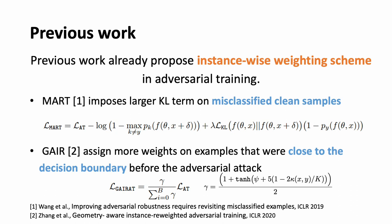Both of these works proposed reweighting methods on top of standard adversarial training. MART assigned larger weights to the KL term if the clean example is misclassified. GEHR assigns more weight to the overall robust loss if it takes fewer attack steps to change the class of prediction.